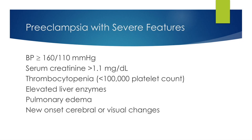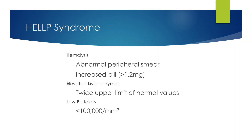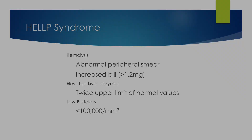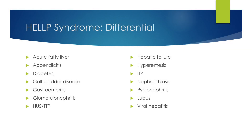The diagnosis of preeclampsia with severe features includes a blood pressure greater than 160 over 110, a serum creatinine greater than 1.1 mg per deciliter, thrombocytopenia with a platelet count less than 100,000, elevated liver enzymes, pulmonary edema, and new-onset cerebral or visual changes. A separate but related condition is HELLP syndrome, which involves hemolysis — manifesting as an abnormal peripheral smear and increased bilirubin levels — elevated liver enzymes at twice the upper limit of normal, and low platelets with a count less than 100,000. Many conditions must be ruled out in the differential diagnosis before making the diagnosis of HELLP syndrome.